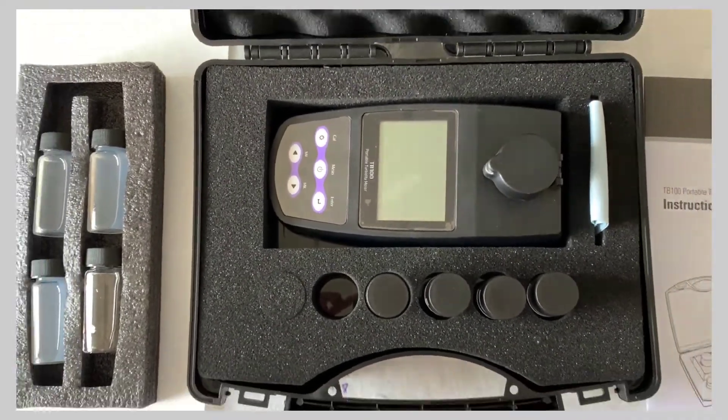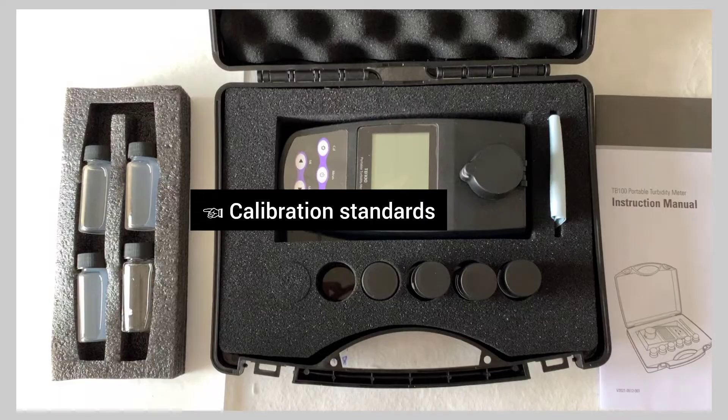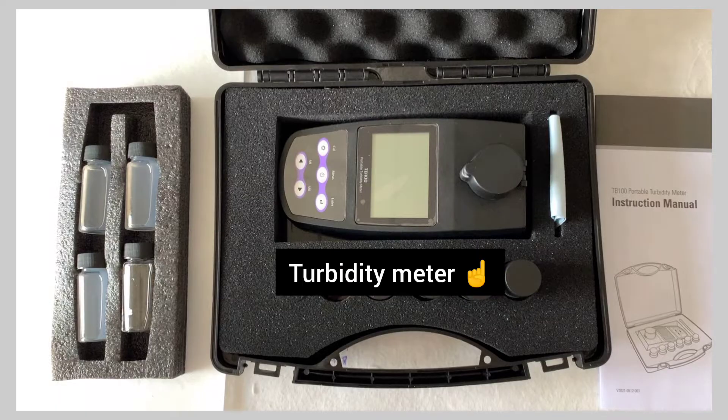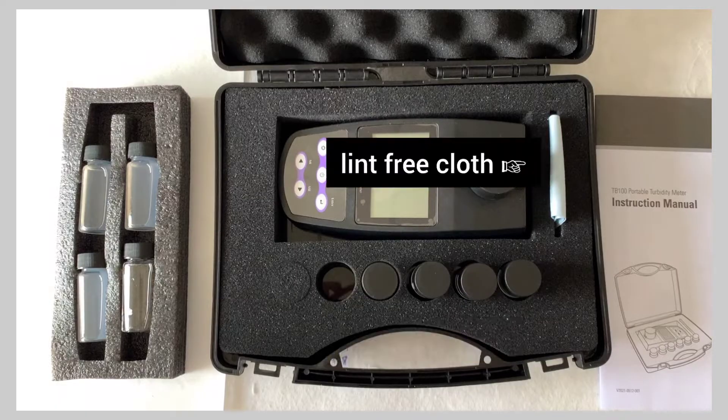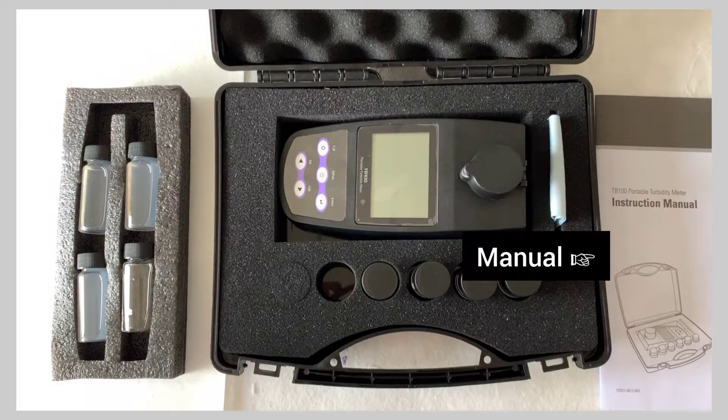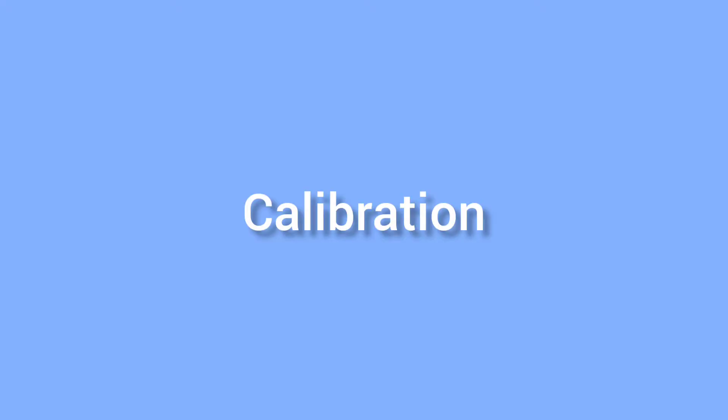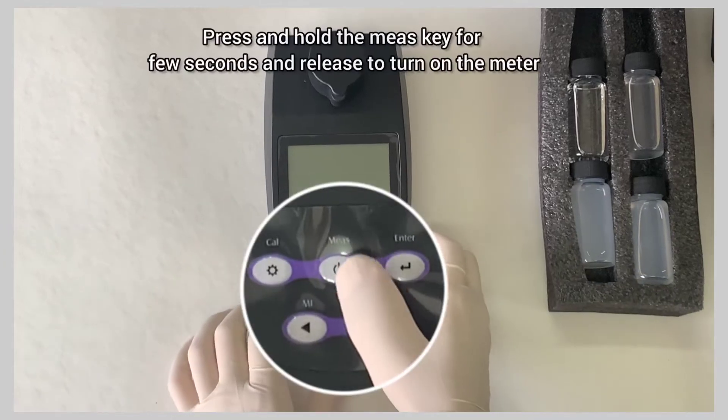The WDT meter set consists of calibration standards, WDT meter, sample cells, lint-free cloth, and a manual book.